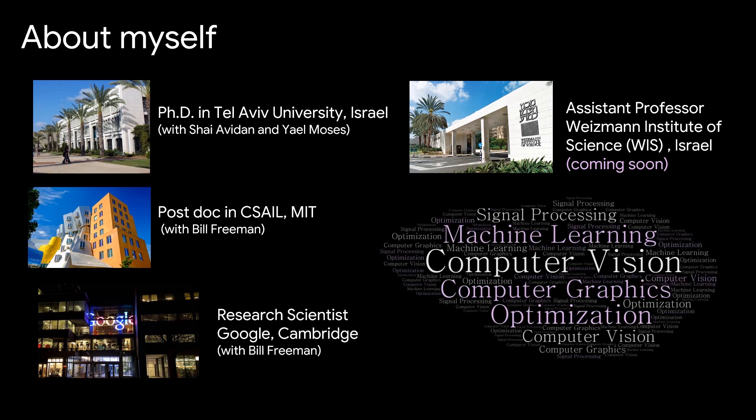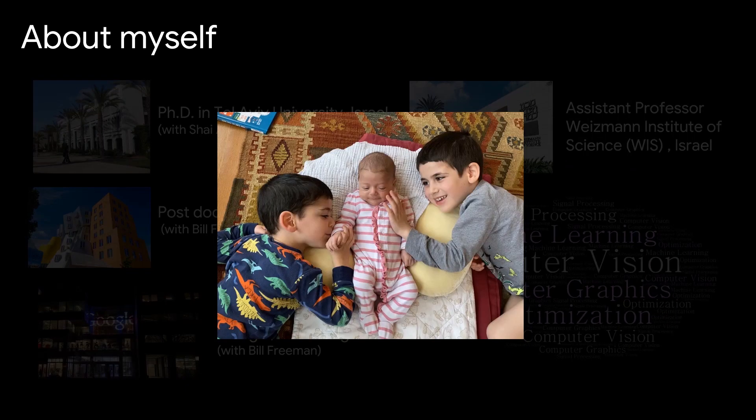My work lies at the intersection of computer vision, computer graphics, and machine learning. Other than that I have another full-time job — being a mom. Itamar is six and a half years old, Adam is four, and Ronnie is two and a half months old. Good news is that it turns out they are pretty useful for research, so expect lots of kids videos.